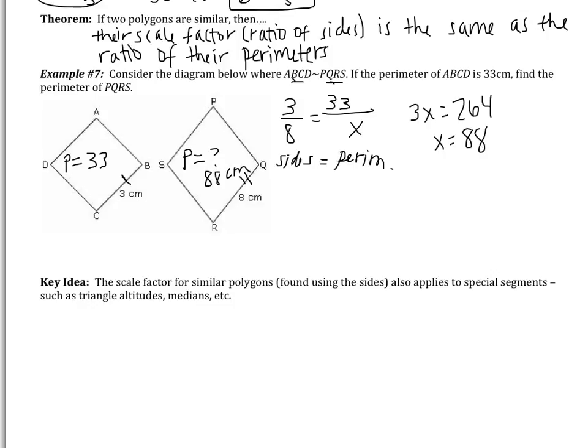The scale factor for similar polygons — found using the sides — also applies to special segments like altitudes and medians, as well as perimeters. We'll be using that idea in class. Please make sure you bring any questions you have to class. See you tomorrow.